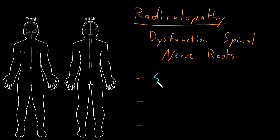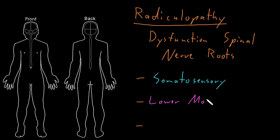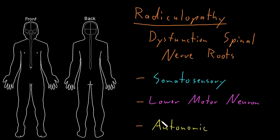We can see somatosensory abnormalities, we can see lower motor neuron abnormalities, and just like with the mononeuropathies, we could theoretically see autonomic abnormalities, because there are autonomic axons in the spinal nerve roots. However, with the common radiculopathies, we usually don't see autonomic abnormalities, or if we do, they're very subtle compared to the somatosensory and/or lower motor neuron abnormalities.